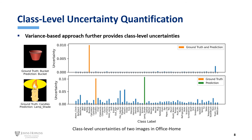Beyond sample-level uncertainties that both approaches are able to derive, our variance-based approach further provides class-level uncertainties. Here are two example images from the Office-Home dataset. For the first image, the ground truth label is bucket, but it kind of looks like a trash can as well, so the model is most uncertain about bucket and trash can. For the second image, the ground truth class is candles. Though the model wrongly predicts it as lampshade, it is still highly uncertain about candles and lampshade together with a few other classes. This class-level uncertainty information might be important in some downstream tasks, but it was not provided by the previous entropy-based approach.